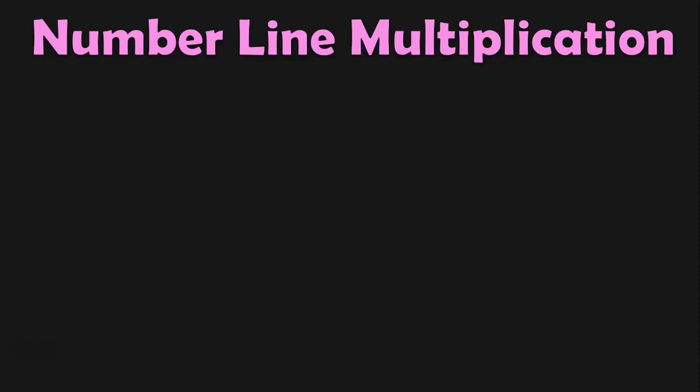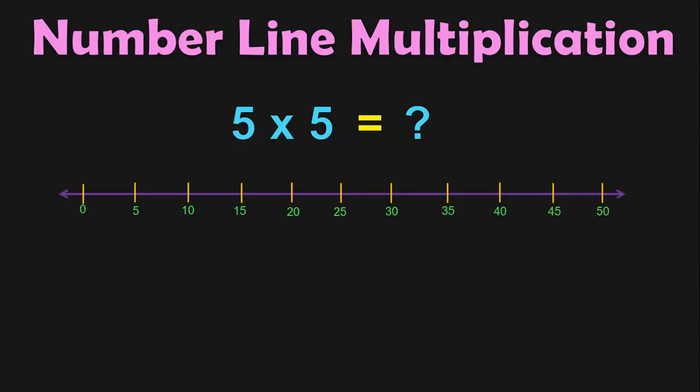The next topic that we are going to revise in this worksheet video is Number Line Multiplication. 5 into 5 is equal to what? We can do this by tables or we can also do it by Number Line Multiplication. Here we have a Number Line with numbers 0 to 50. What does 5 into 5 mean? 5 groups of 5 items each. In Number Line Multiplication, it will be 5 jumps, and in each jump we will skip 5 numbers.